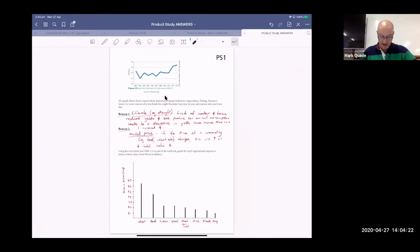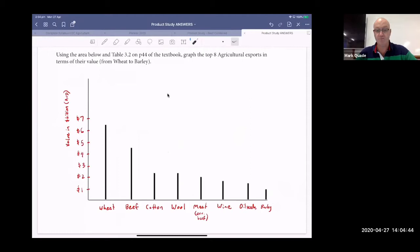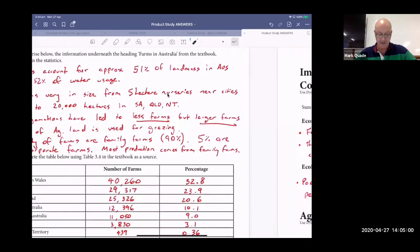Using the area below and table 3.2 on page 44 of the textbook, graph the top eight exports in terms of their value. So wheat is the biggest, beef, then cotton, wool, meat excluding beef (so sheep), wine, oilseeds, barley. And that's billions of dollars up on the side.